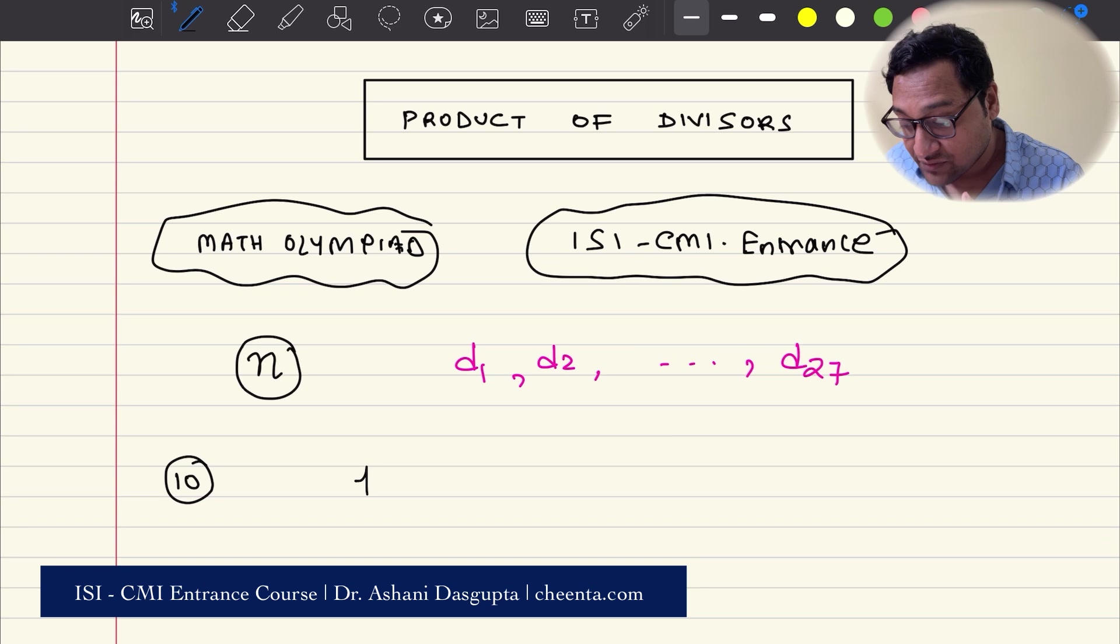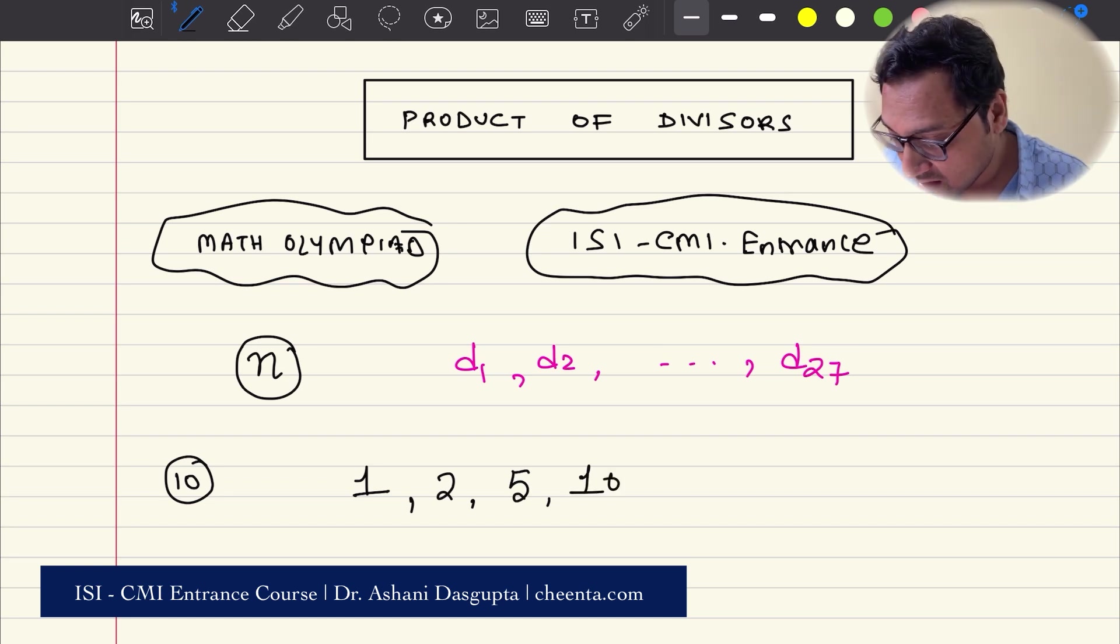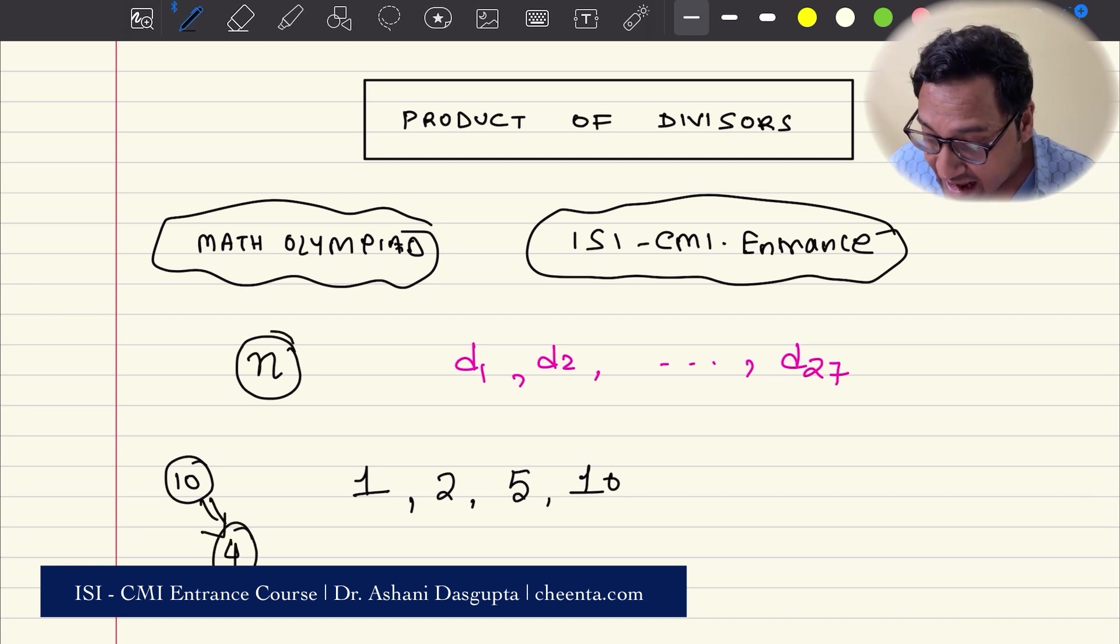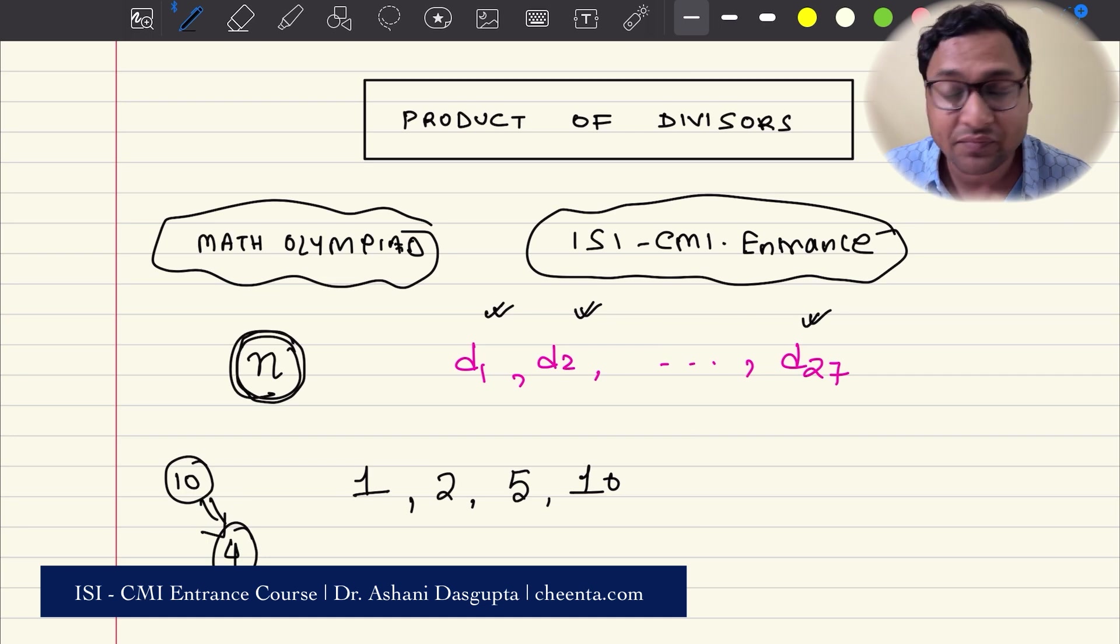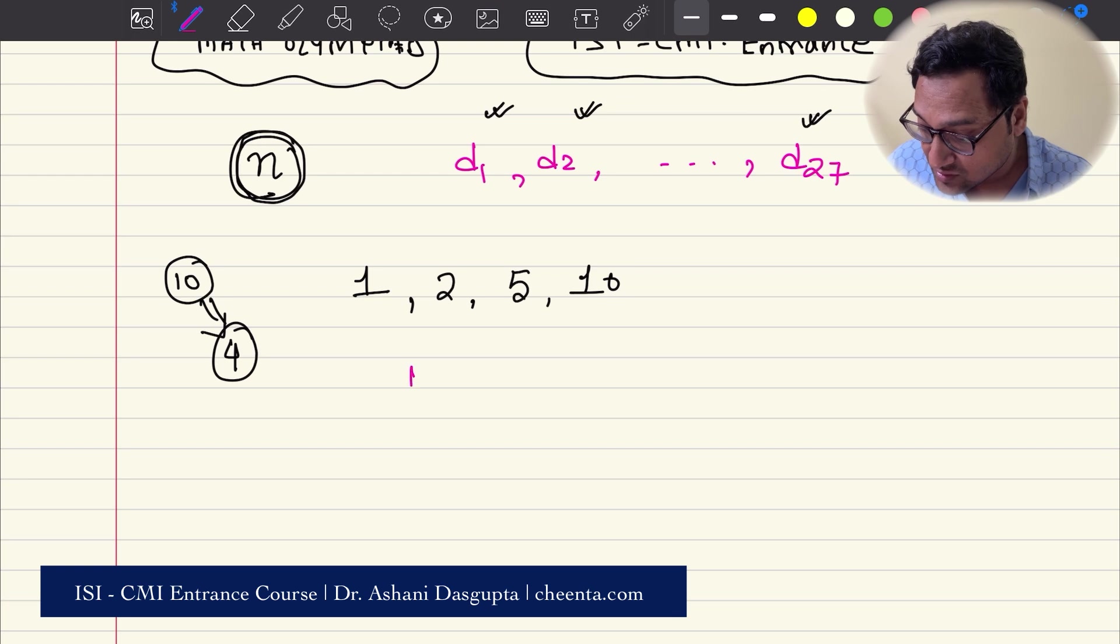1 is of course a divisor of 10. 2 is a divisor of 10. 5 is a divisor of 10, and 10 itself is a divisor of 10. So 10 has 4 divisors. It's given that N has 27 divisors. We have to find out the product of the 27 divisors.